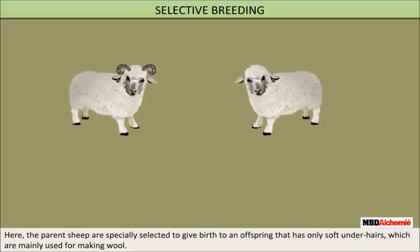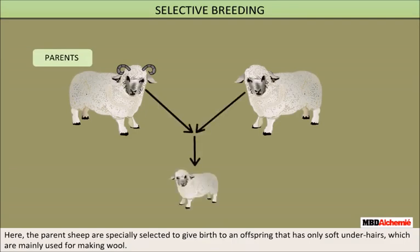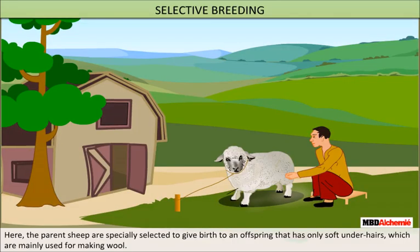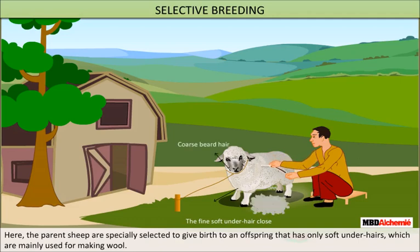In selective breeding, sheep parents are specially selected to give birth to offspring which have only soft under hairs, which are mainly used for making wool.